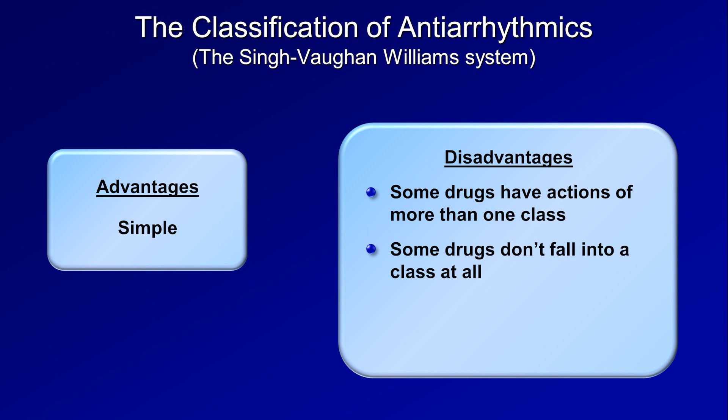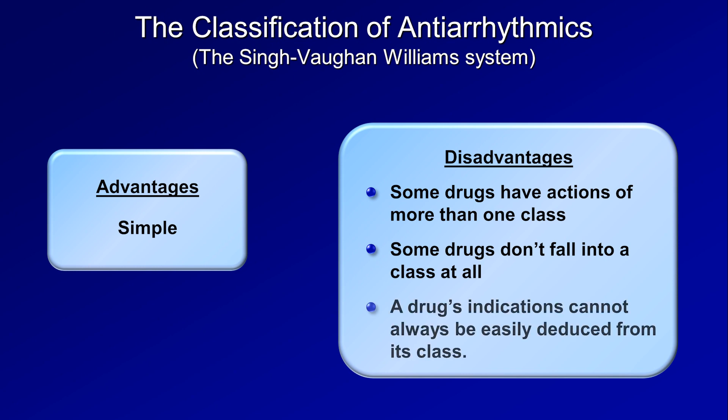And third, a drug's indications cannot always be easily deduced from its class. For example, some class 1 drugs are used for atrial fibrillation but not ventricular tachycardia, and other class 1 drugs are used for ventricular tachycardia but not AFib. So it's sometimes difficult to predict which drugs should be used for which arrhythmia from first principles. But despite these disadvantages, in the 50 years since its proposal, no one has come up with a better system.